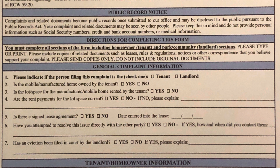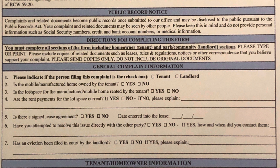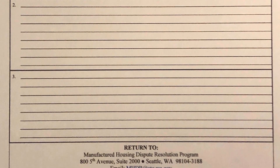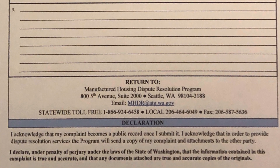Directions for completing this form state: you must complete all sections of the form including homeowner, tenant, and park community landlord sections. Please type or print. Please include copies of related documents such as leases, rules and regulations, notices, or other correspondence that you believe support your complaint. Please send copies only — do not include original documents. This is a sample of page two of the complaint form; we'll look at this form more closely later.